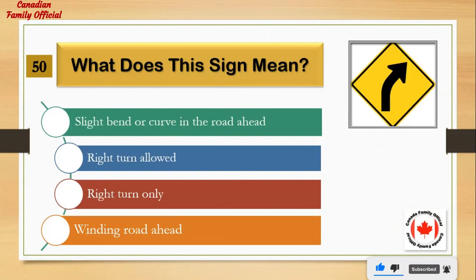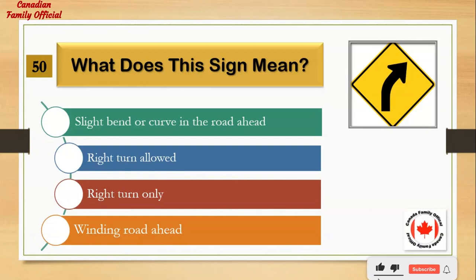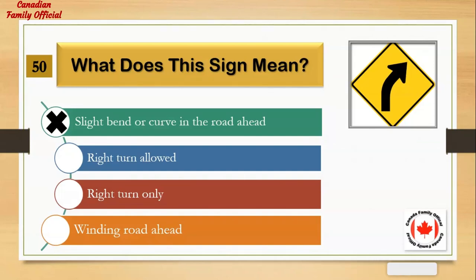What does this sign mean? Number 1: slight bend or curve in the road ahead. Number 2: right turn allowed. Number 3: right turn only. Number 4: winding road ahead. And the answer is: slight bend or curve in the road ahead.